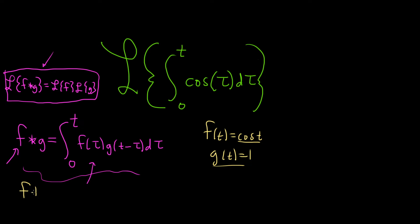That's the definite integral from 0 to t. f of tau—well, we said f of t was cosine t, so that'll be cosine of tau. And then g of t minus tau. Well, g of t is 1, so g of anything is 1, so this is just 1, d tau. But look at that, that's exactly what we have.